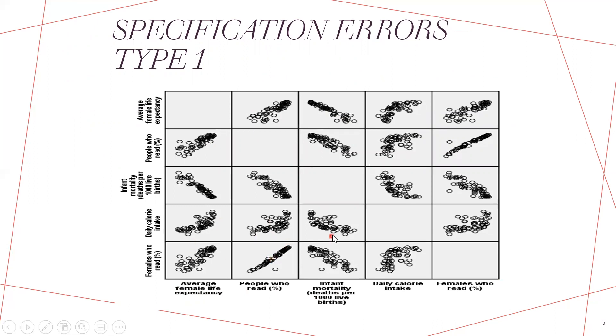But if, for example, we have such kind of pattern like with daily calorie intake and the female who read, or for example, the female deficit potency and the calorie intake, this is not exactly linear. So still applying the multiple linear regression is actually affecting the interpretation of the coefficient.